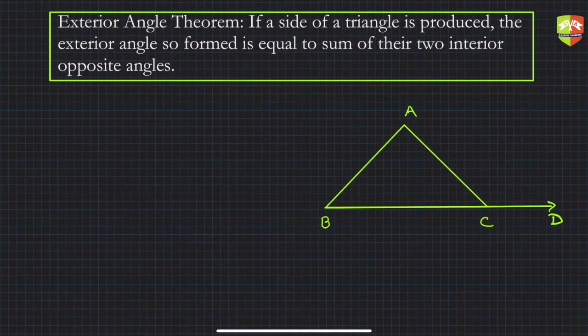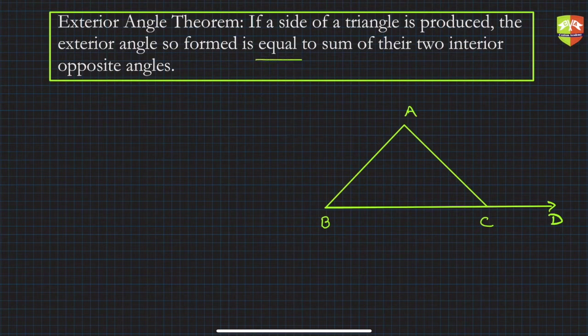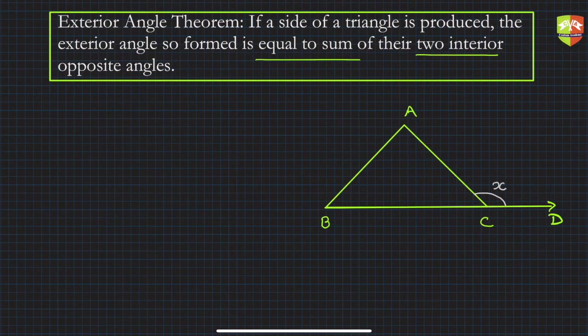We saw the validation of the theorem in the previous part. Now let's prove it. The statement is: if a side of a triangle is produced, the exterior angle so formed is equal to the sum of the two interior opposite angles. Let's call the exterior angle x; then x equals the sum of the two interior opposite angles y and z.